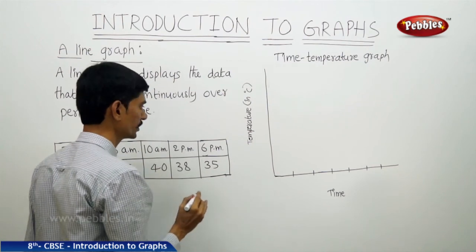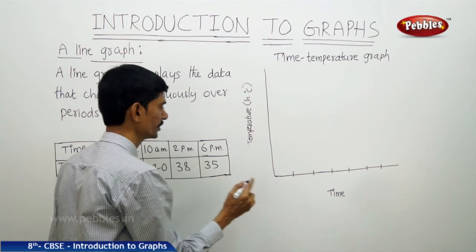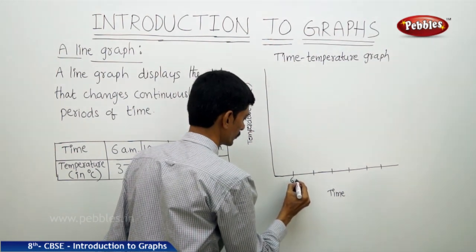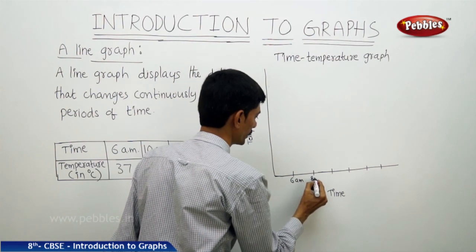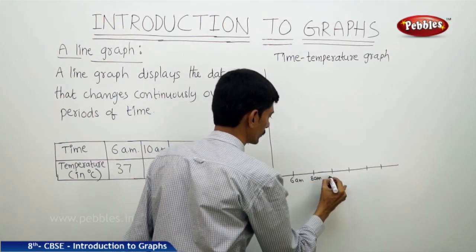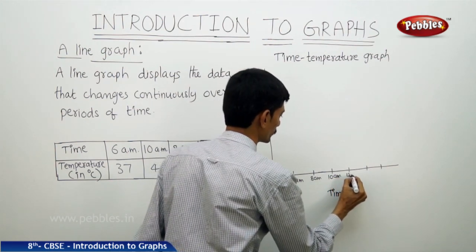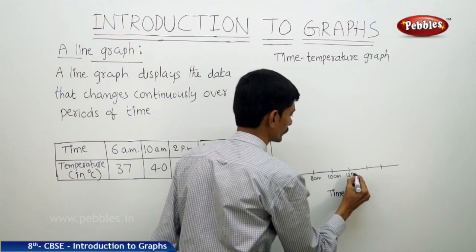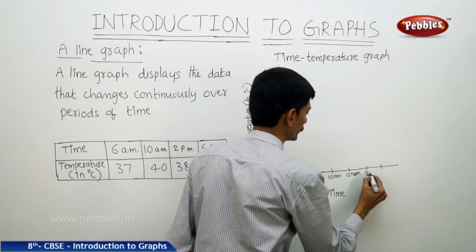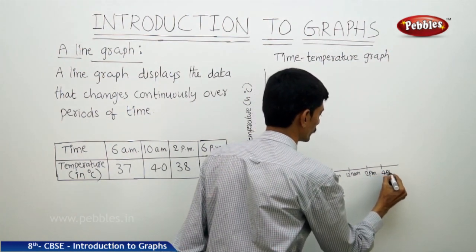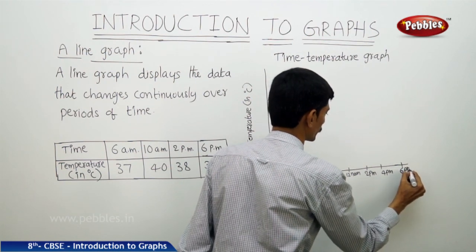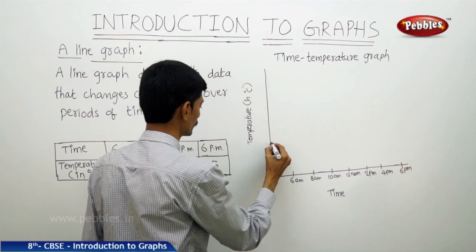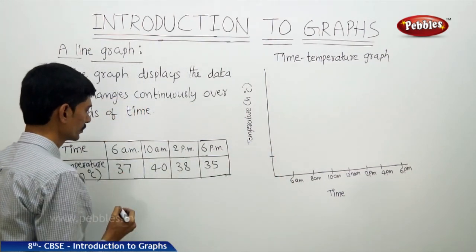We will take the time on the x-axis with equal intervals from 6 a.m. to 6 p.m. So here: 6 a.m., then 8 a.m., 10 a.m., 12 noon, then 2 p.m., then 4 p.m., then 6 p.m.